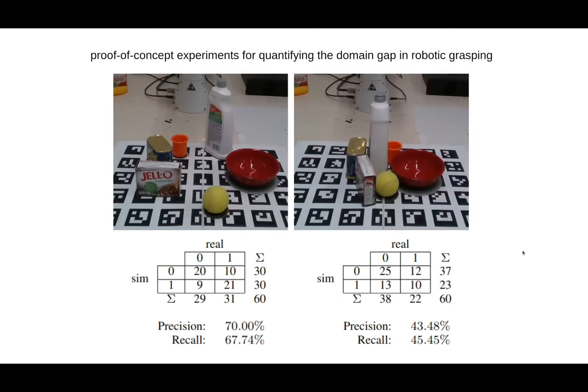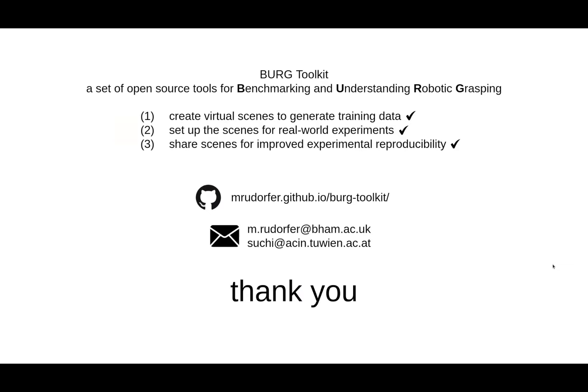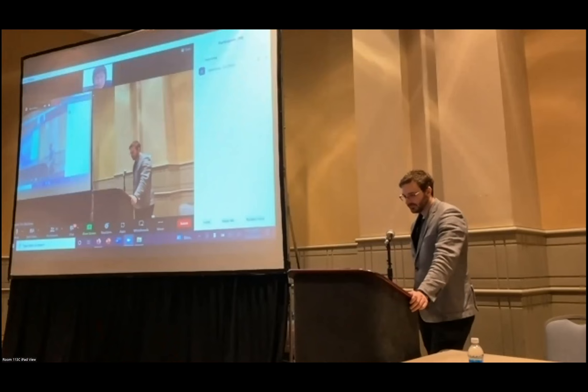In proof-of-concept experiments to investigate the physical domain gap, results confirm this gap and indicate that simulation is more accurate for scenes with isolated objects than for more compact scenes where objects are almost touching each other. We will further investigate this gap in the future and use the gained knowledge to improve the simulation environment. Thank you — feel free to check out our project page and get in touch with us.